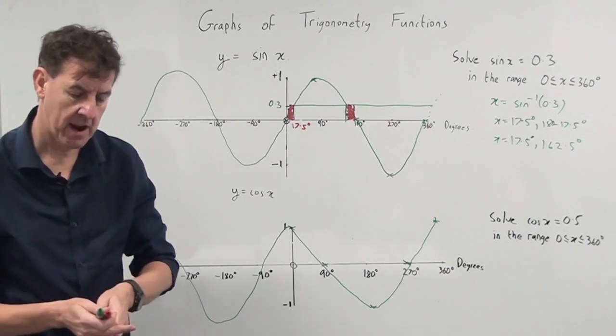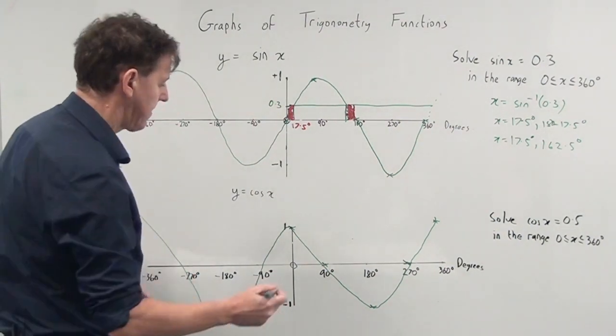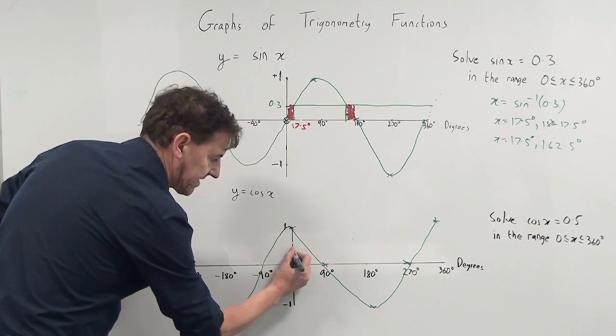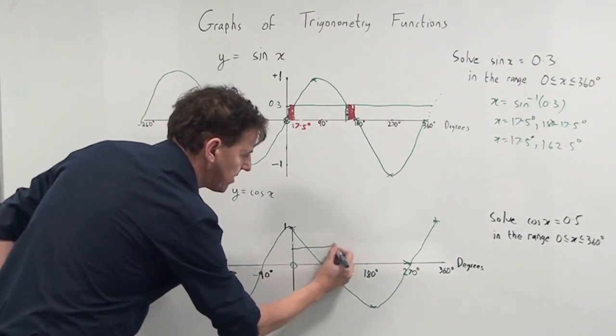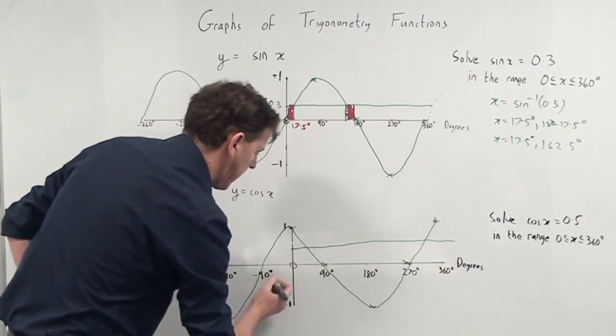So here we go. Remember this is a sketch, so I don't have to be too accurate. All I'm doing is drawing a line across between the range 0 to 360 at 0.5.